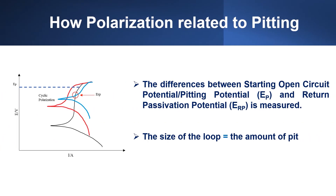Cyclic polarization is a type of polarization which is performed in a cyclic manner. It is susceptible to pitting corrosion, described by pitting potential. The difference between the values of the starting open circuit potential and the return activation potential is measured. The size of the loop is often related to the amount of pitting.